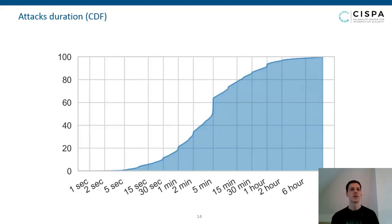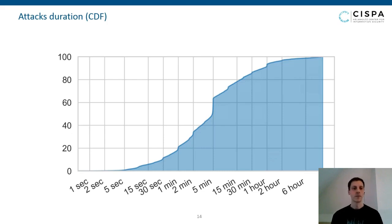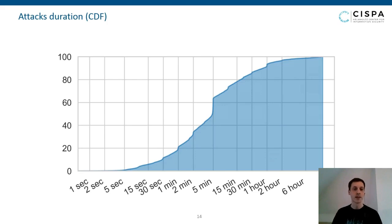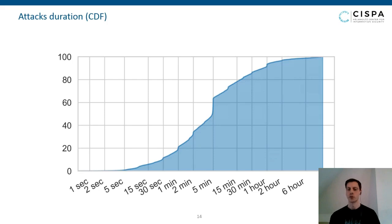Another interesting plot looks at attack duration. The CDF shows that 90% of all attacks are shorter than one hour, and 80% are shorter than 50 minutes. There are pronounced steps at the one-minute mark, two-minute mark, and a big step at the five-minute mark. All of this hints that these attacks are highly automated — script kitties running bash scripts, or in many cases attacks launched by booter services or other infrastructures that have really commoditized these attacks.